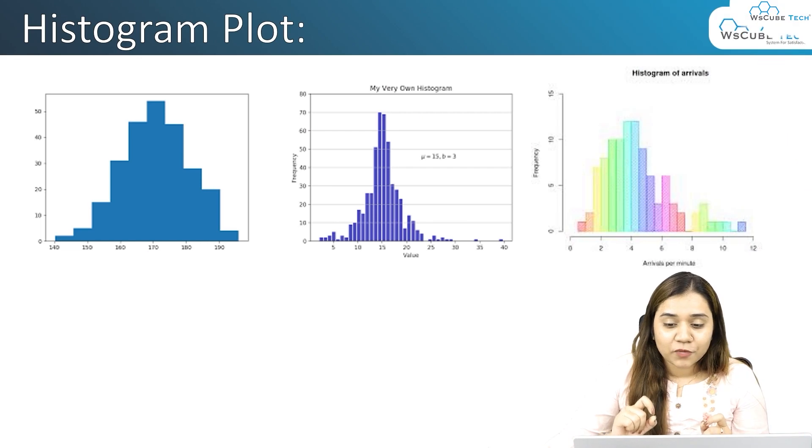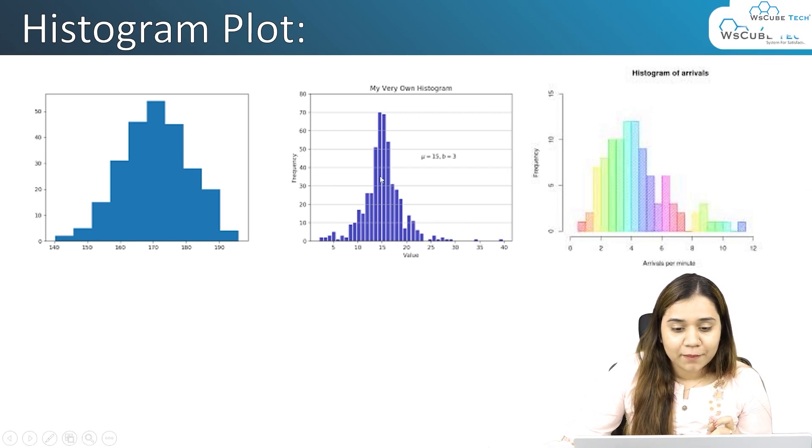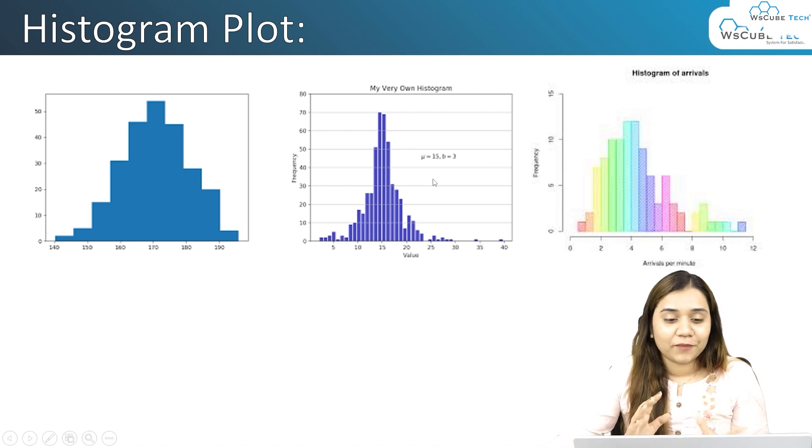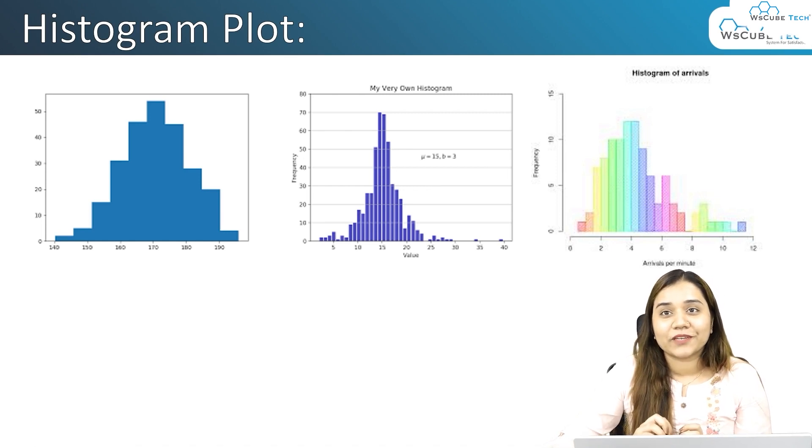Welcome to WSKubeTech. In our previous session we covered legends. In today's session we'll be talking about histogram plots. A histogram plot is a kind of plot we've seen since childhood where all the bars are attached to each other. Let's have a look — histogram plots look like this. We have three examples of how histogram plots look, and they look pretty amazing.